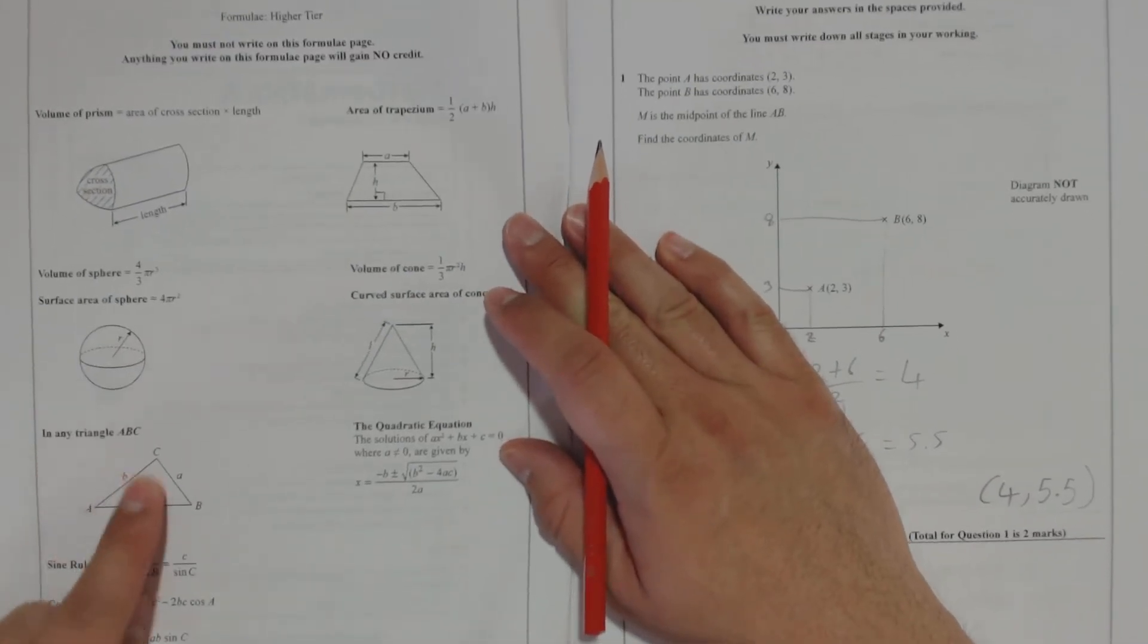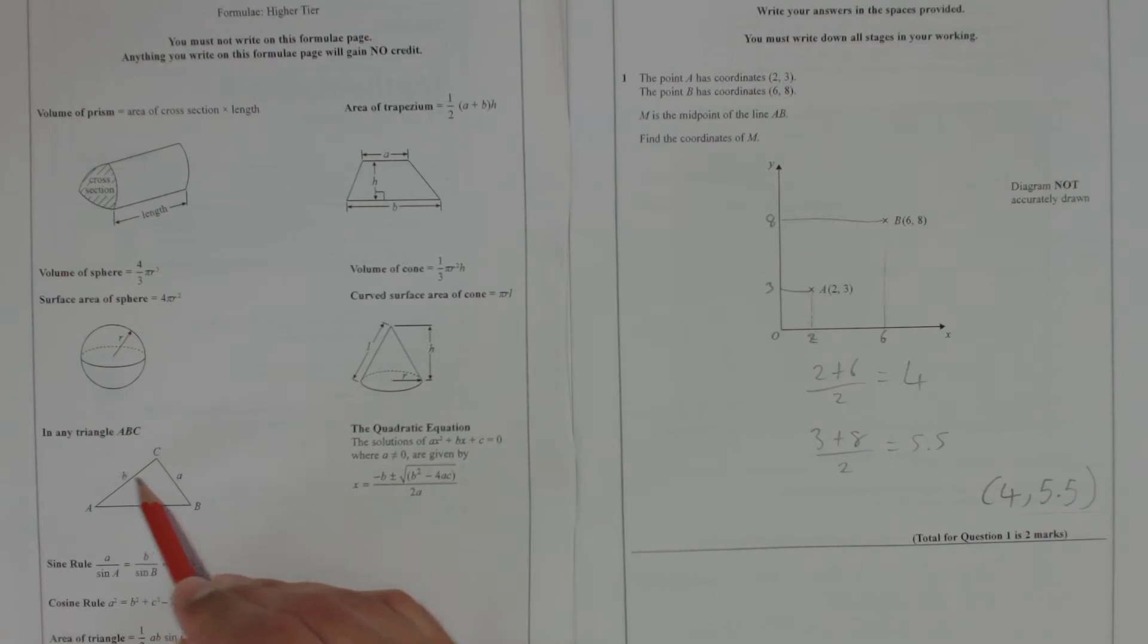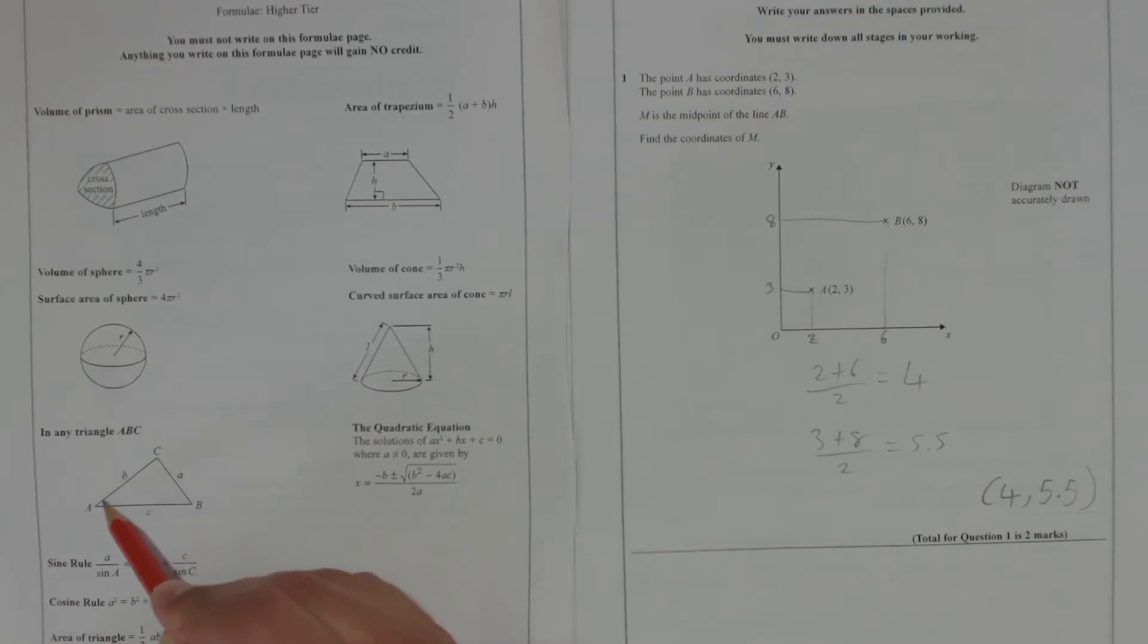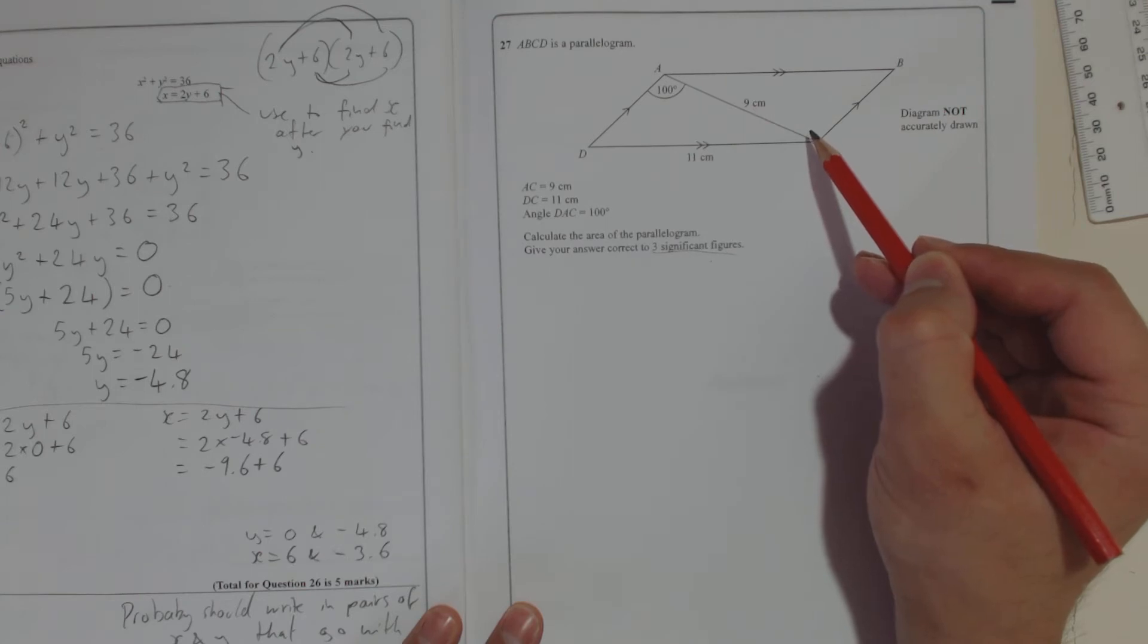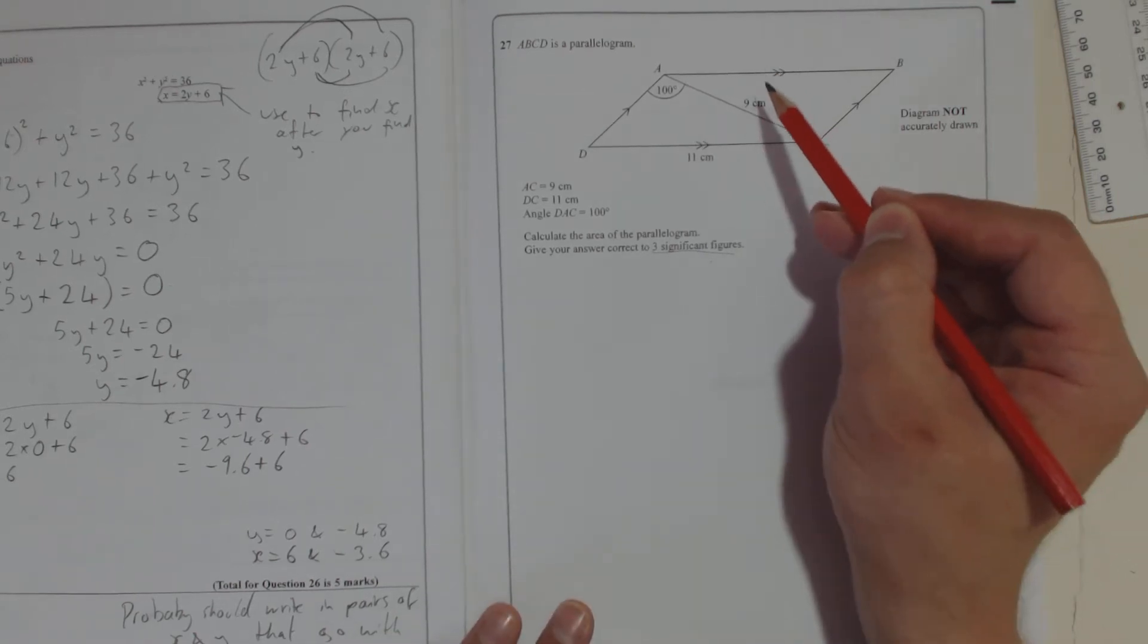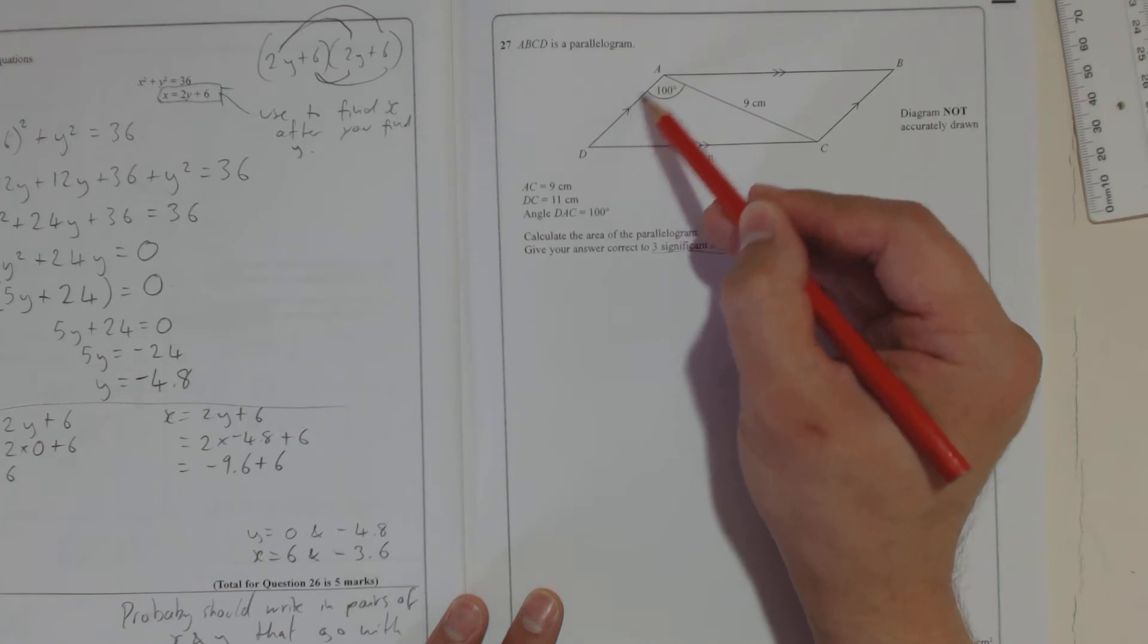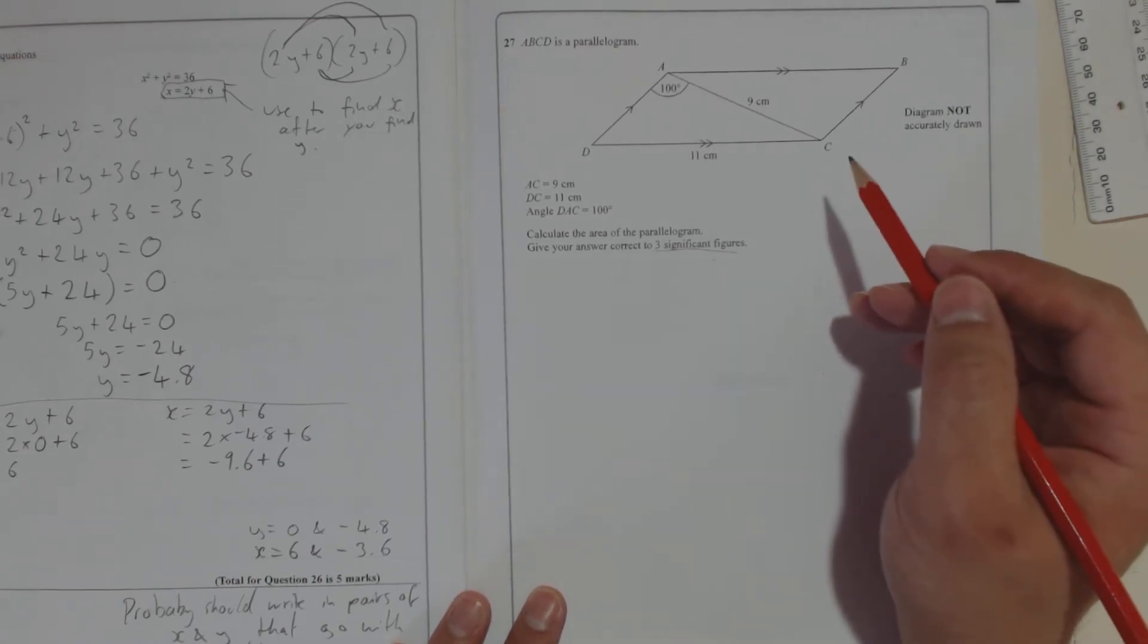So this is one of those questions. And we want to be able to find the area of this triangle. Well, there's a formula for area of a triangle. Remember, they're all at the front. It says here, in any triangle ABC, the area of a triangle is half AB sine C. So if you look here, A and B are two sides. So it's half times this side times this side times the sine of the angle in between. Well, that would work on any of us. So it could be half times this side times this side times the angle in between.